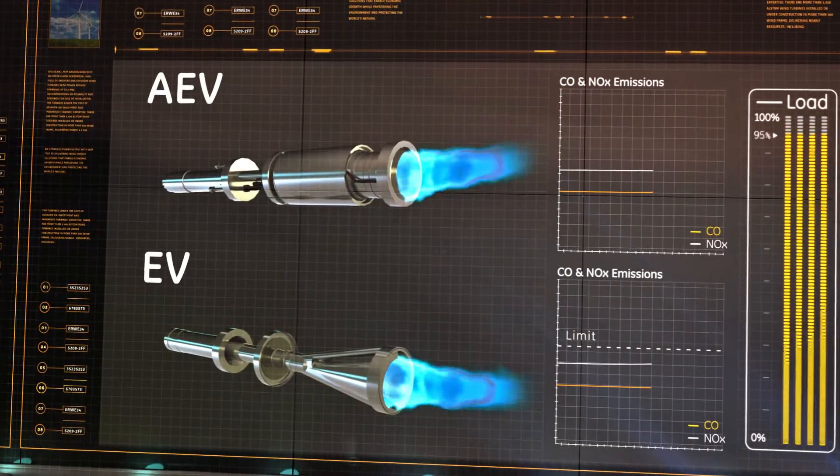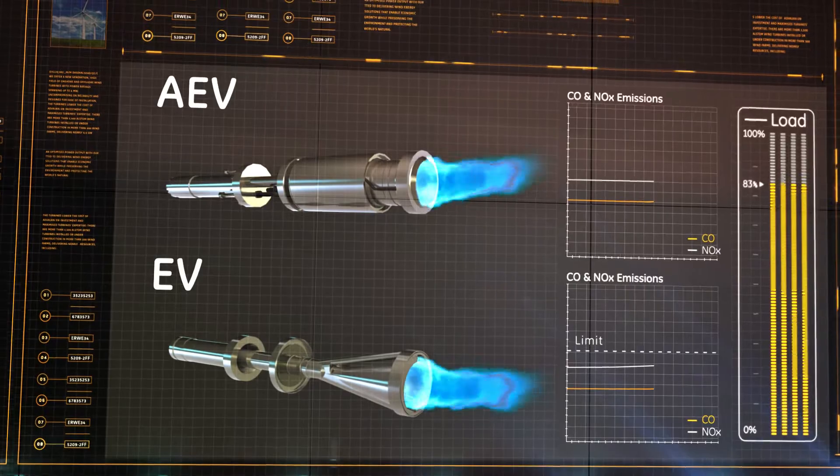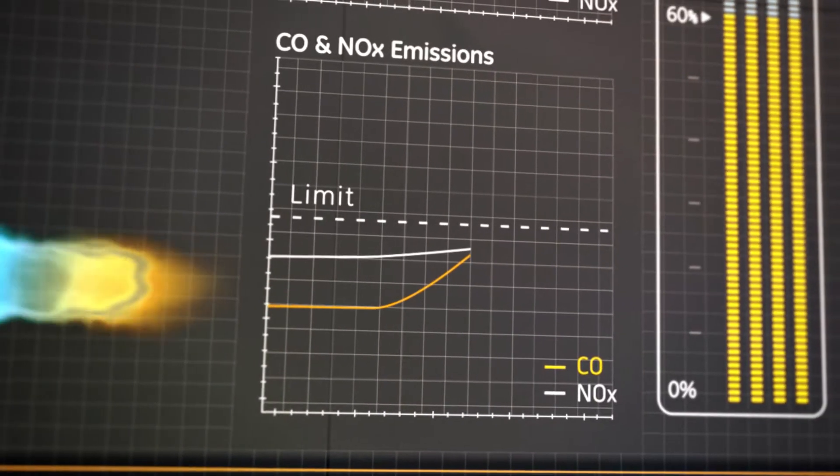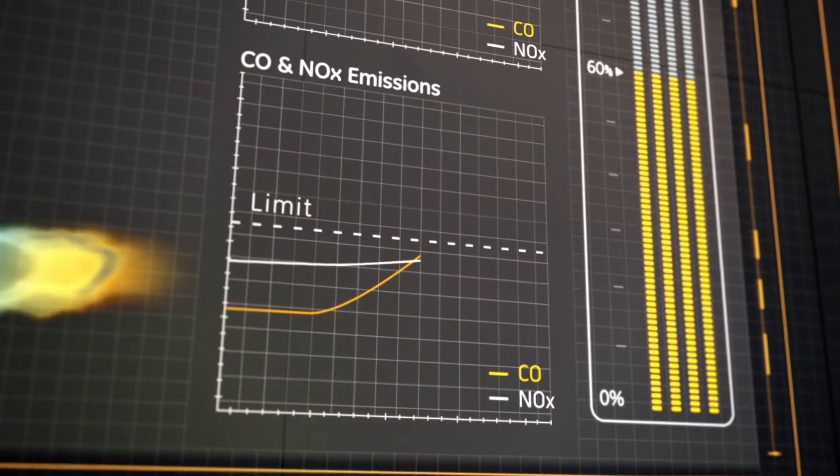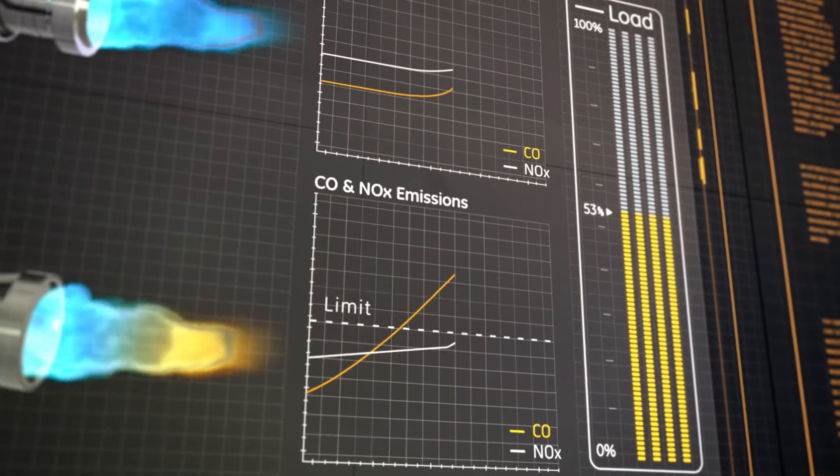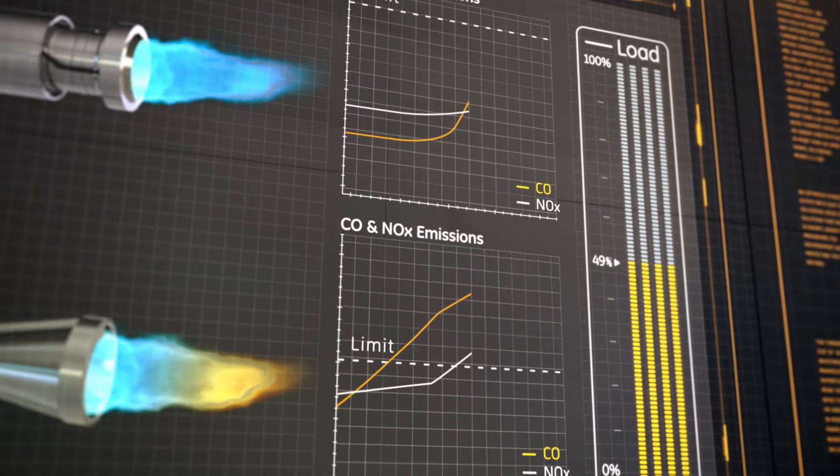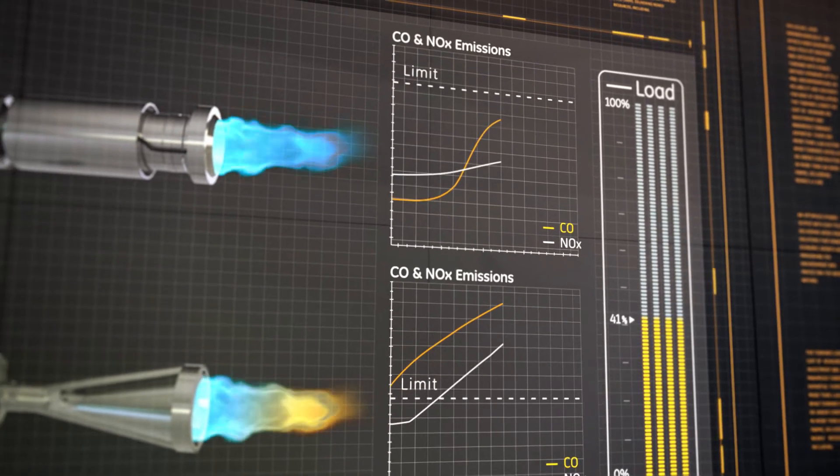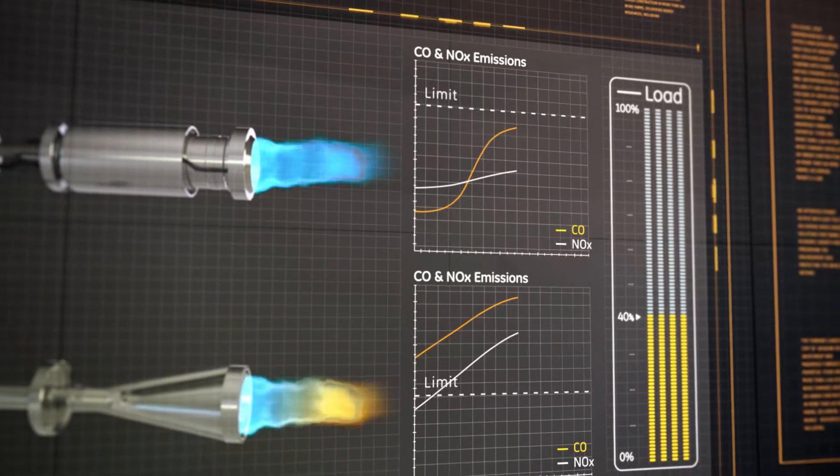As power output is reduced, the EV burner typically switches back to pilot operation at 60% GT load, resulting in a step increase in emissions. The AEV burner's innovative concept of continuous fuel staging eliminates a switch over and switch back, allowing emission-compliant GT operation down to as low as 40% GT relative load.